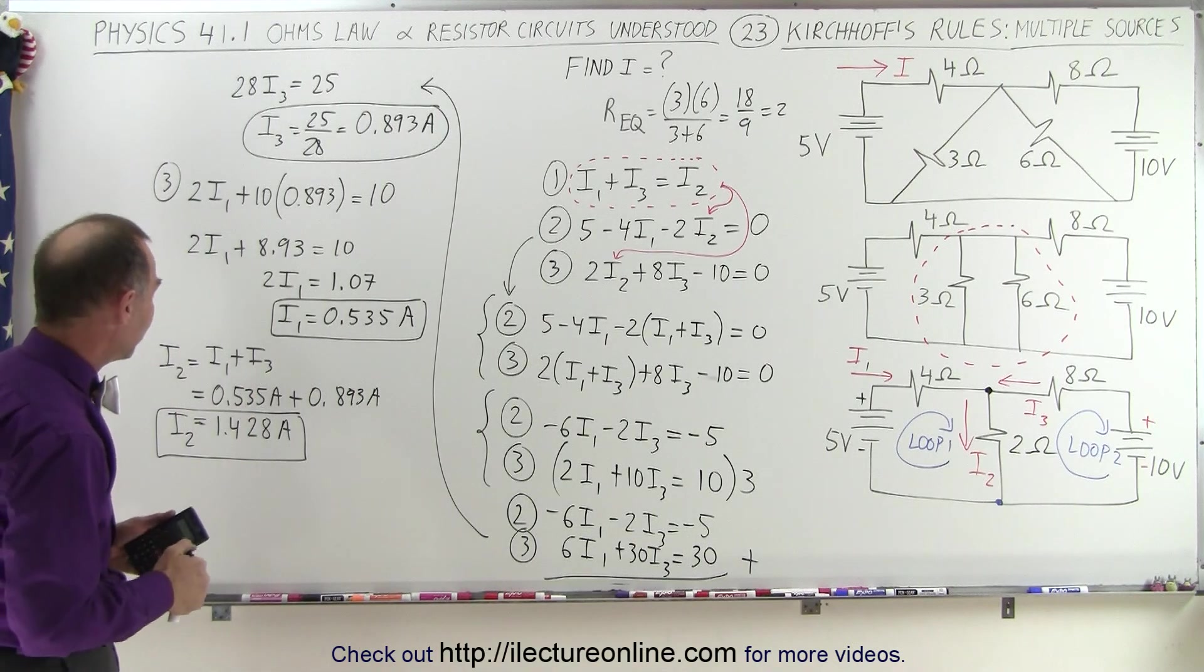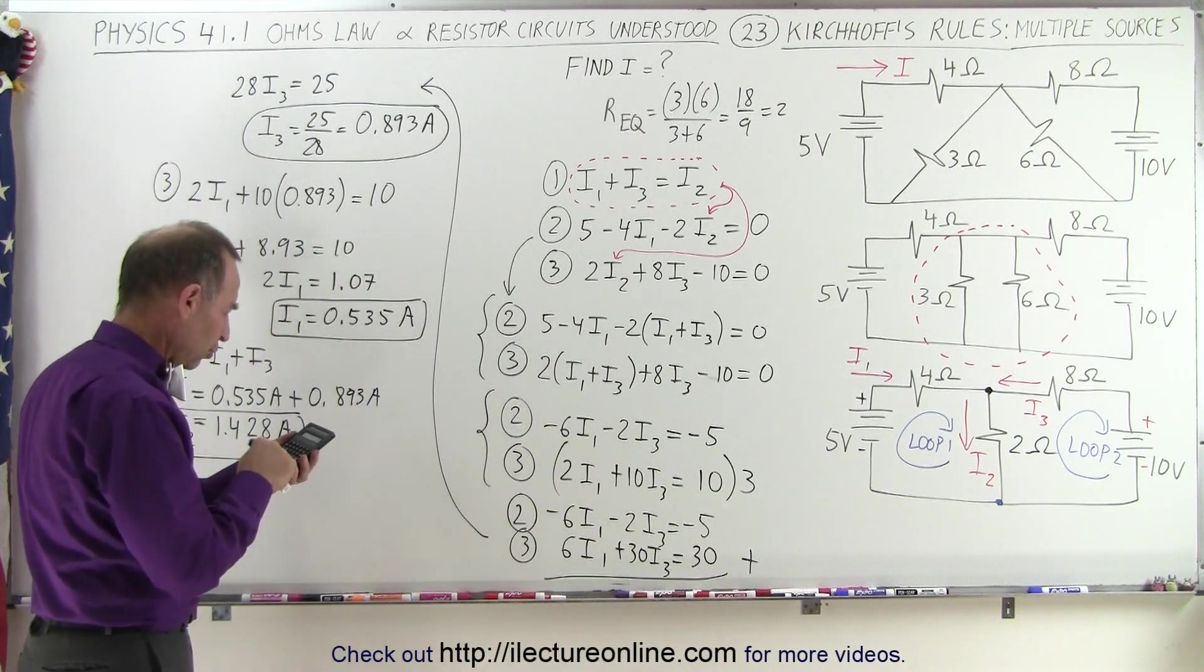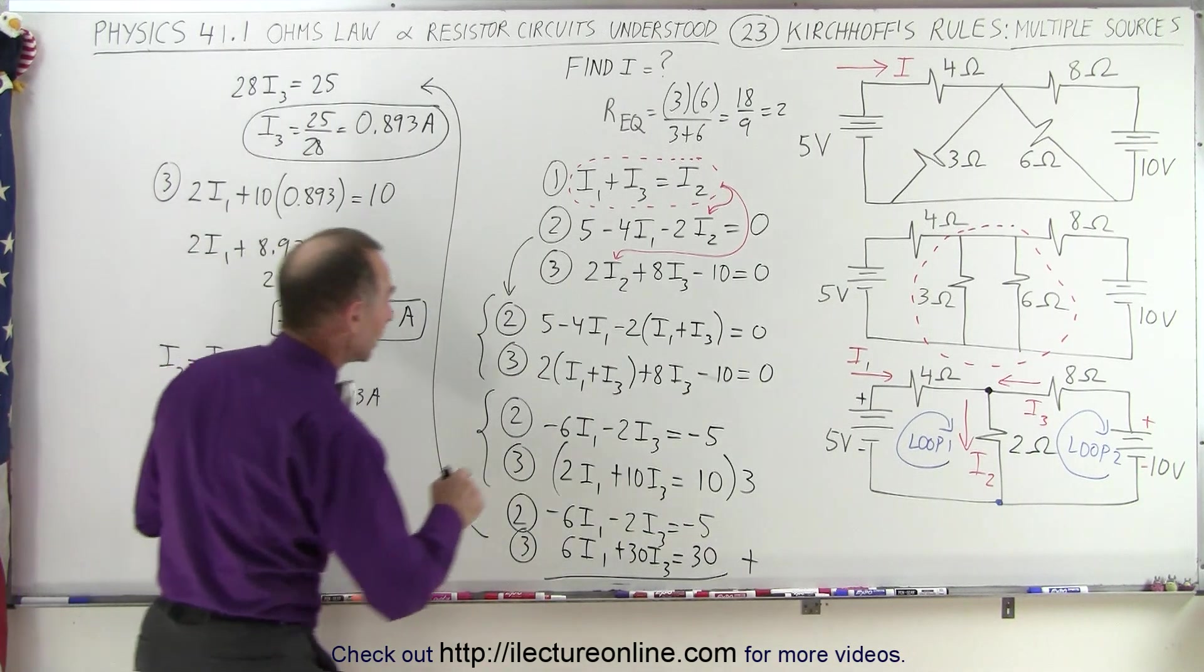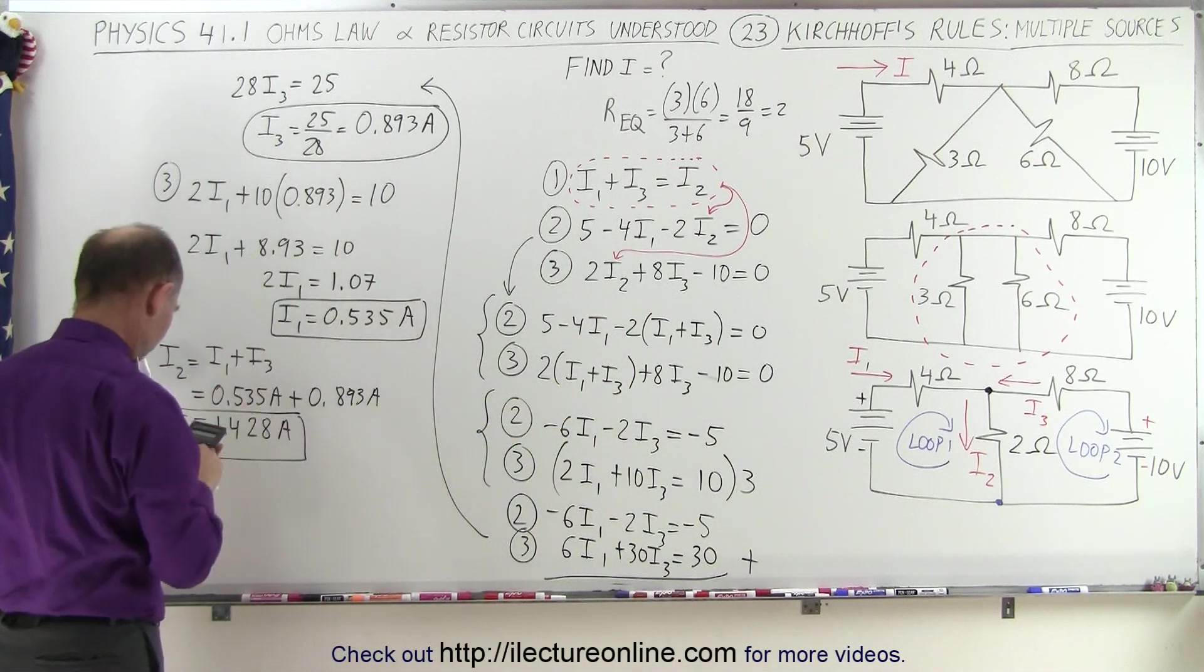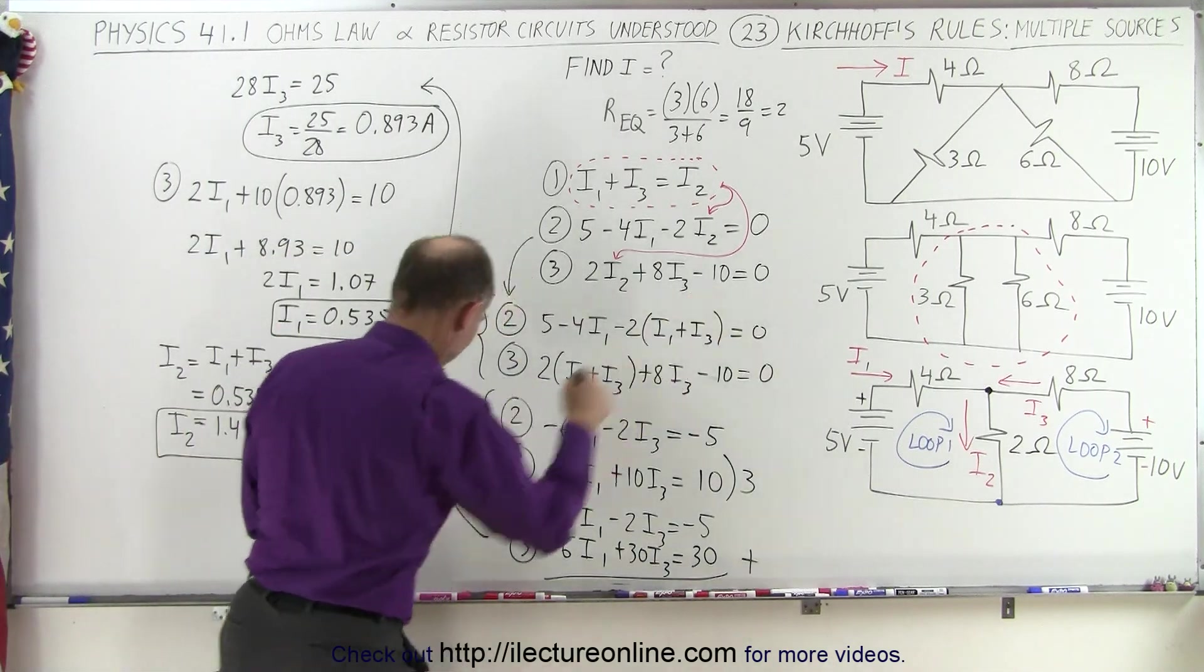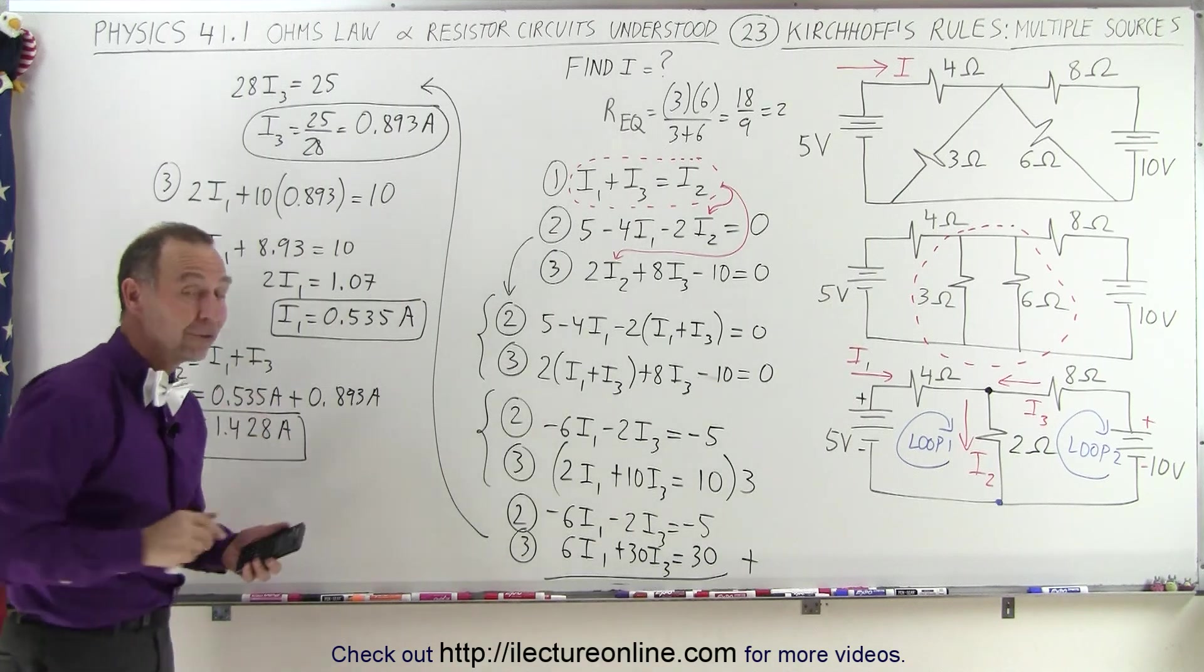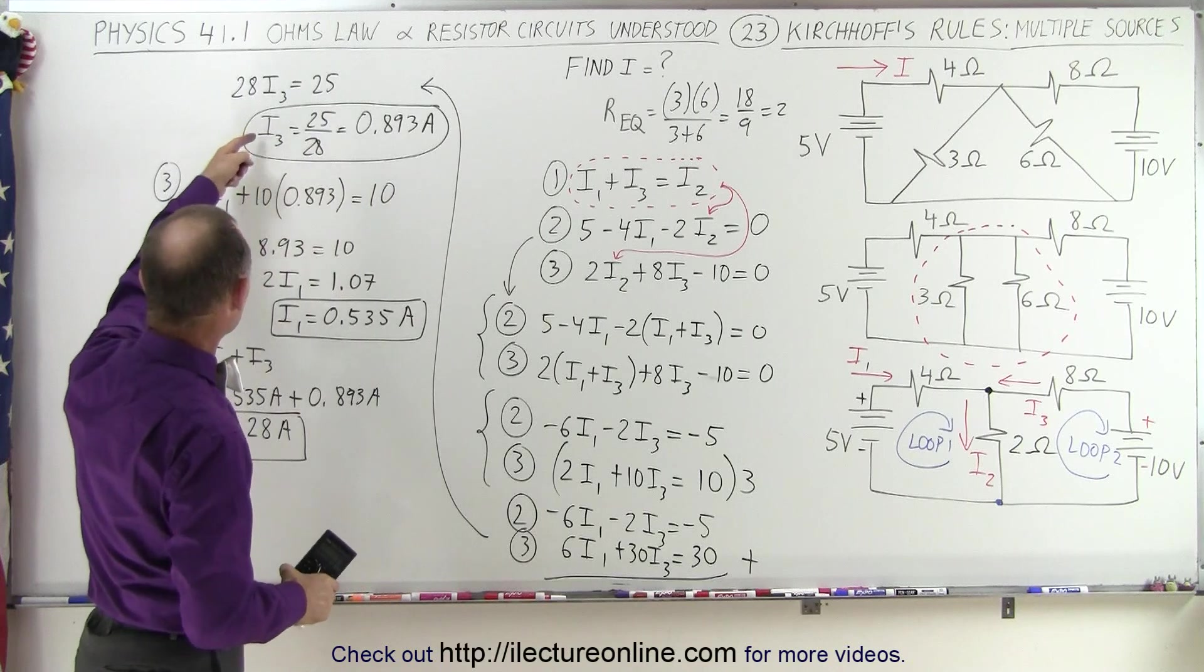And then let's use this equation here, 2 times I2, 1.428, plus 8 times I3, plus 8 times I3, which is 0.893, and then minus 10, equals, and I get 0. So it turns out both those equations are correct when I plug in the values for I3, I1, and I2 in there.